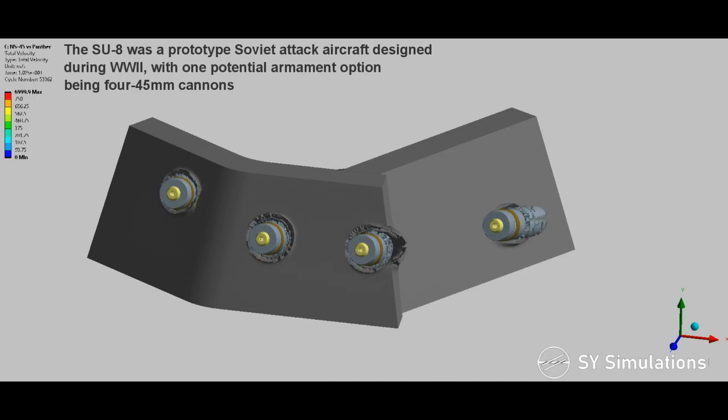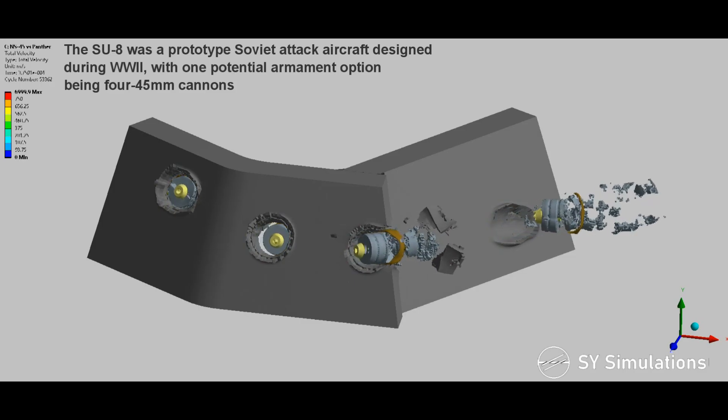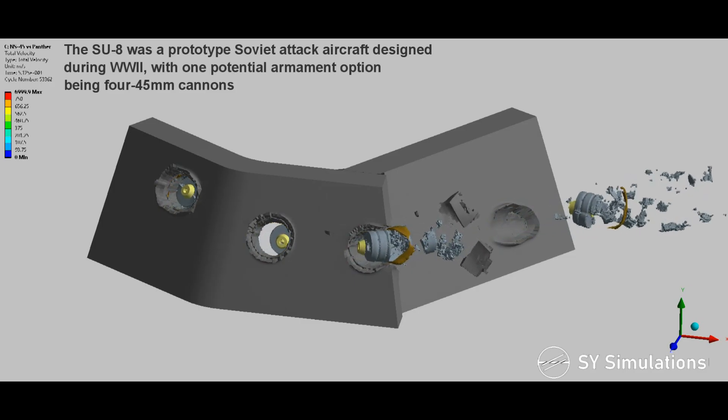The Su-8 was a prototype Soviet attack aircraft designed during World War II with one potential armament option being four 45mm cannons.